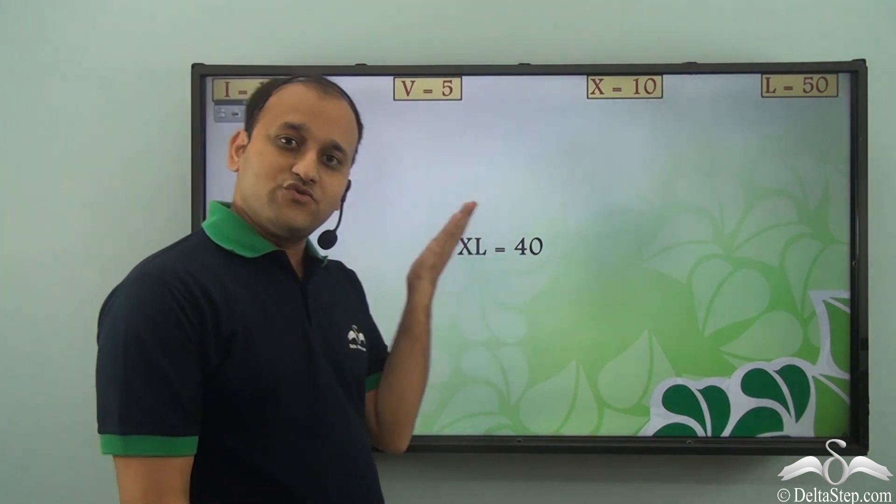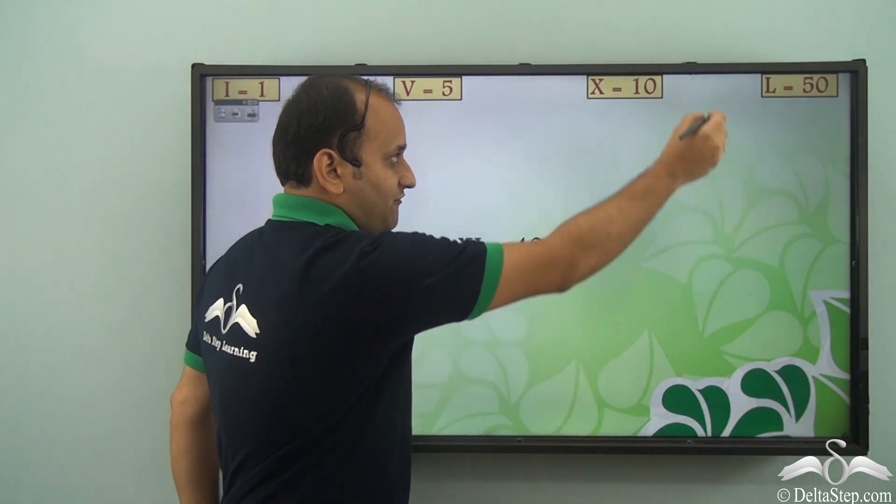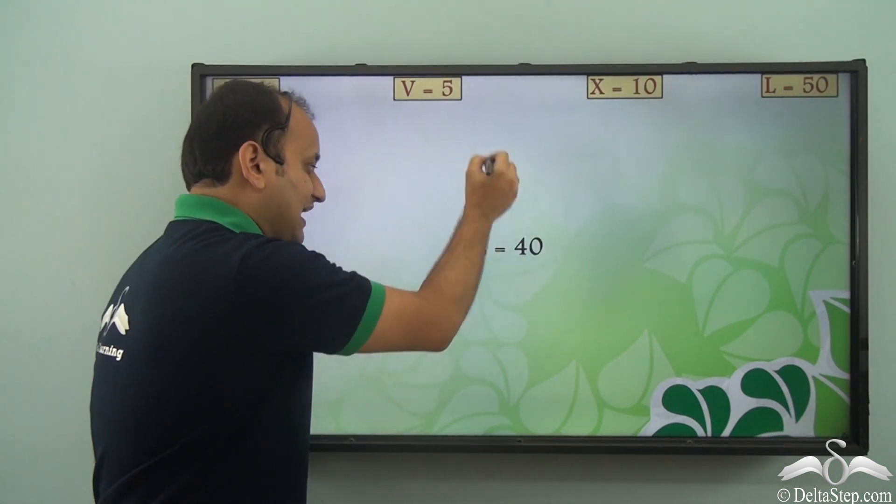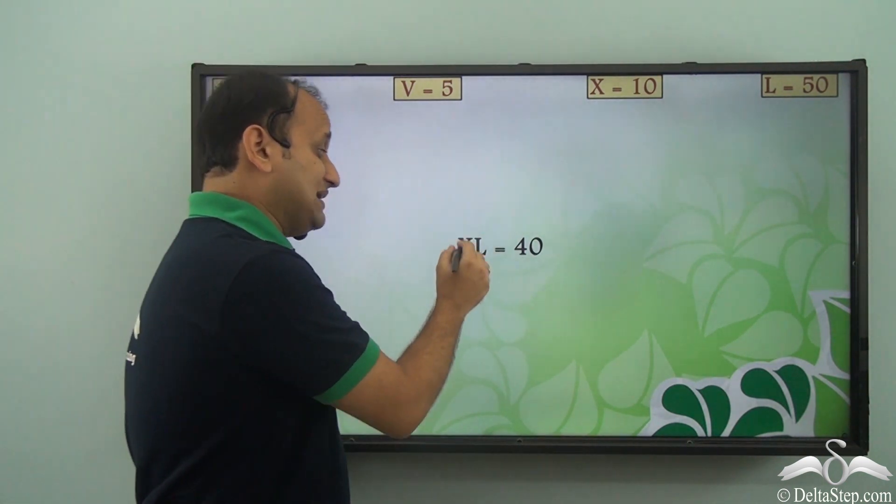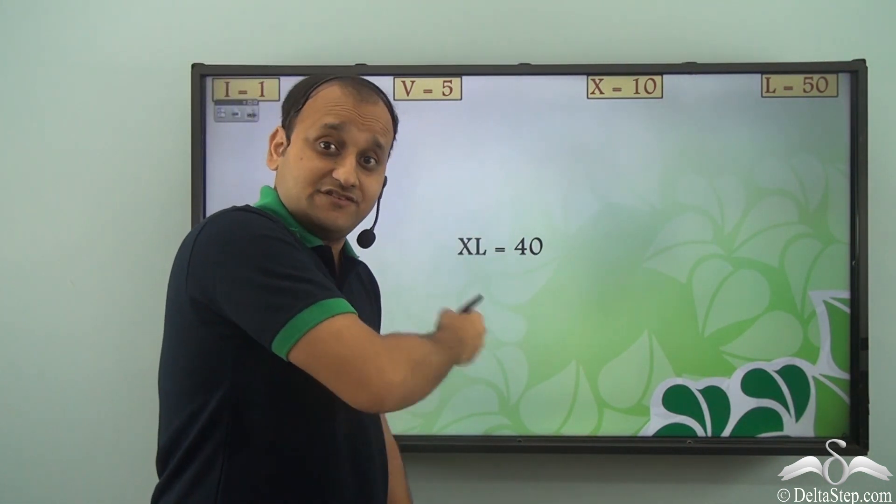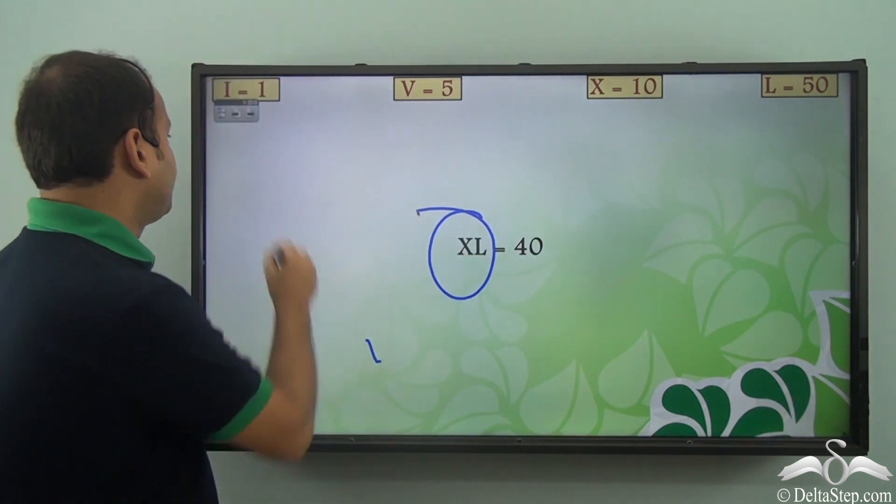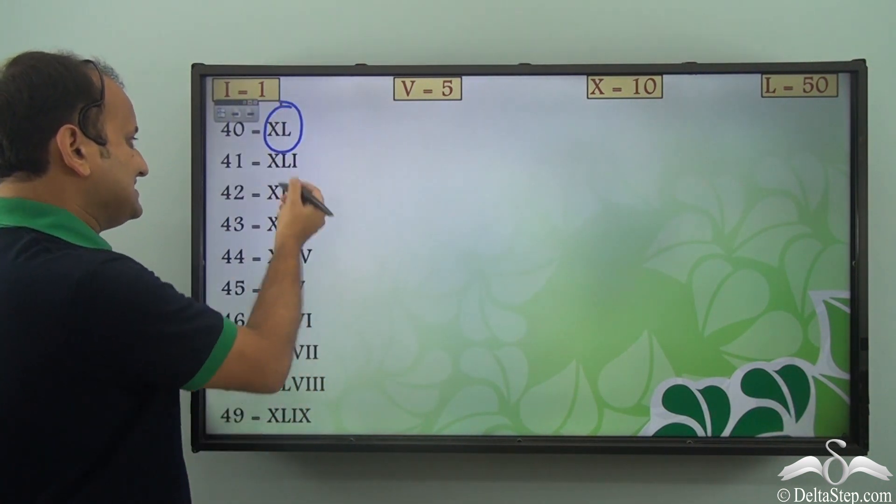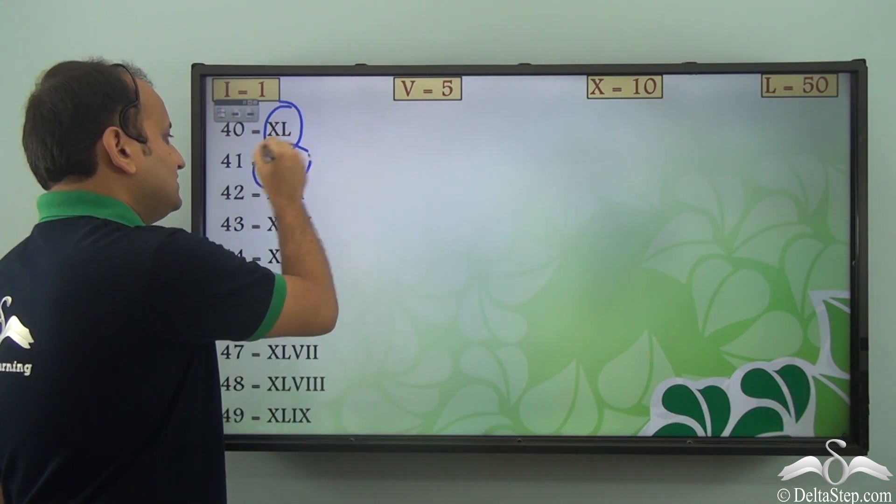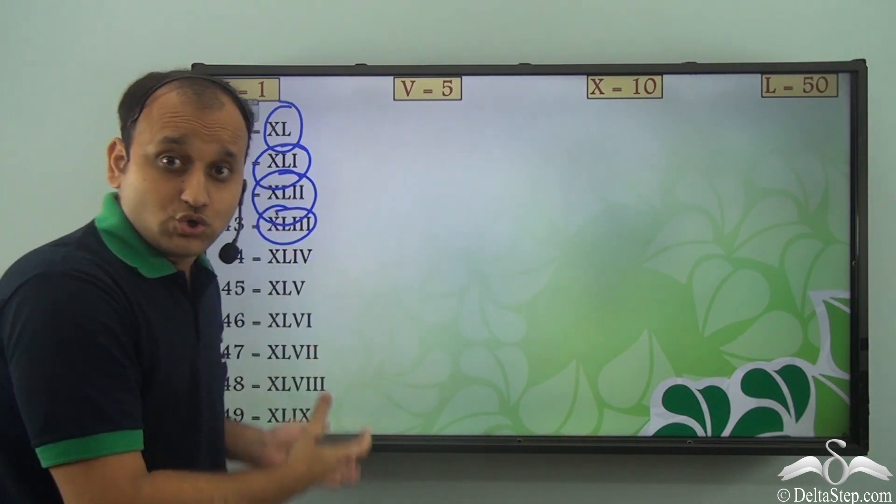So how do we write 40 in case of Roman numerals? Well, in terms of 50, that is in terms of L. So we write a 10 to the left of 50 which means 10 less than 50, which is 40. So this is how we write 40. And once we have 40, we can easily write the next numbers, that is 41, 42, 43 and so on.